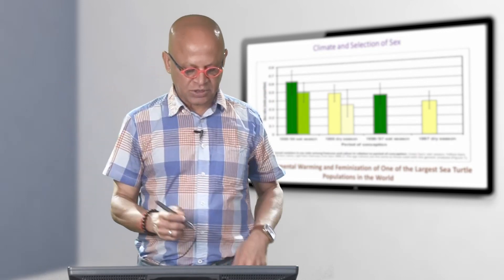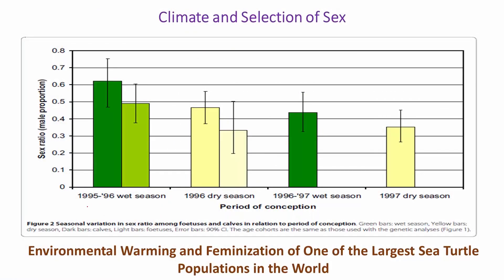So here it is showing the sex ratio among the fetuses and cows or young babies of an African buffalo for different seasons. 95-96 was a wet season, 96 later in the year was a dry season, later part of 96, early part of 97 again was a wet season, 97 again was a dry season.